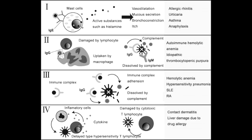Give some examples of type 4 hypersensitivity reaction. Examples include multiple sclerosis, Guillain-Barré syndrome, graft-versus-host disease, and the PPD test for tuberculosis, which requires a few days of waiting because it's a type 4 hypersensitivity reaction — a delayed response. So this requires a few days before the test can be read.